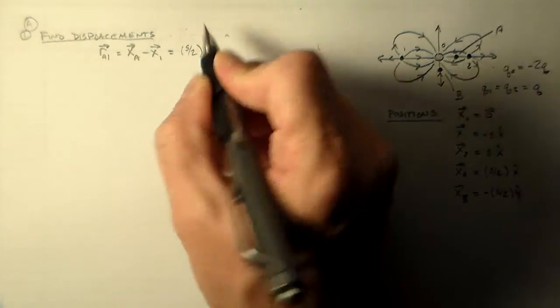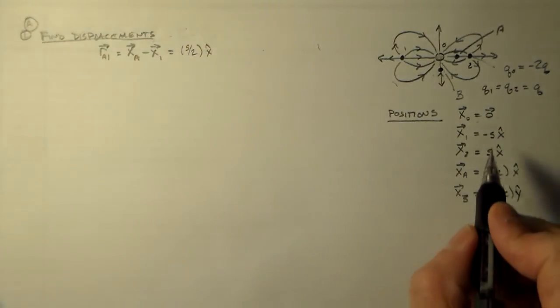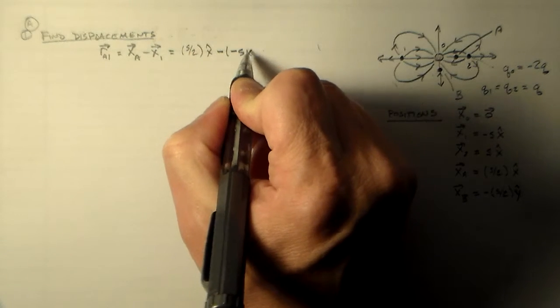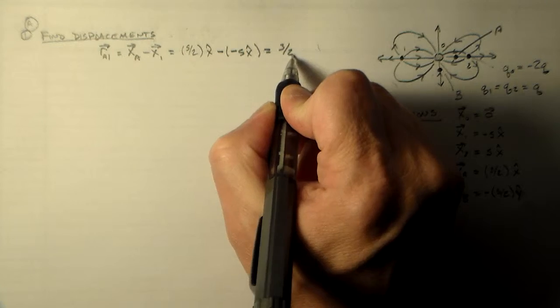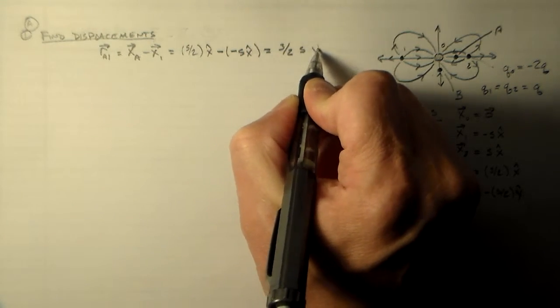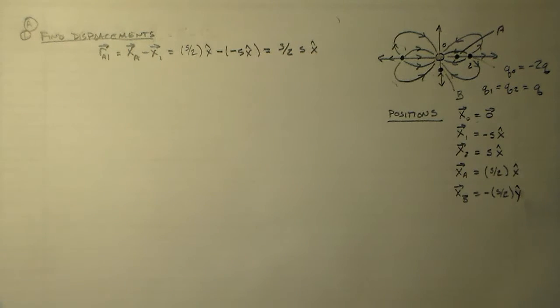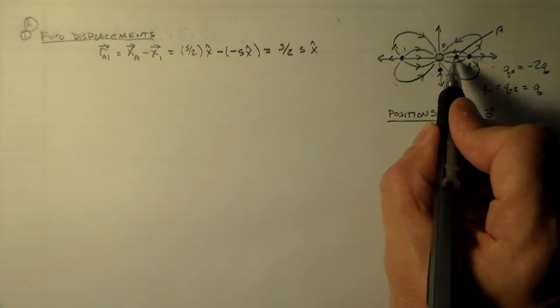So that makes a total of 3 halves s in the x hat direction. So it's going this way, 3 halves x. That makes perfect sense. That's exactly what we see here. 1 half, 2 half, 3 halves, right?